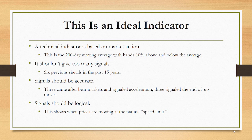This indicator meets the criteria for an ideal indicator. It's based on market action, so it adapts to what's happening in the market. It shouldn't give too many signals — we can't act on a signal every day — and this one gave six signals in the past 15 years, each noteworthy. Three at the end of bear markets did indicate acceleration; the other three signaled the end of significant up moves. The signals should also be logical.